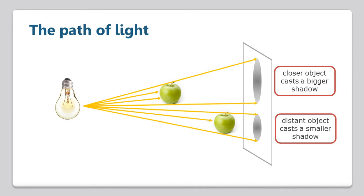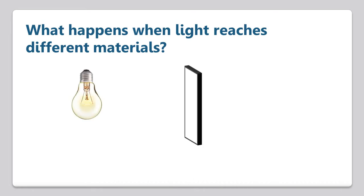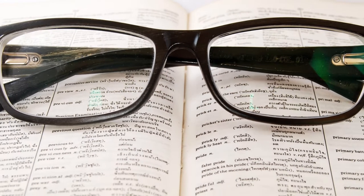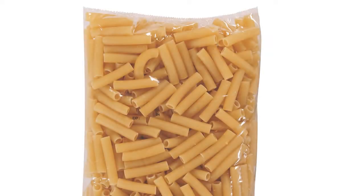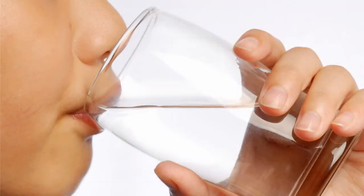Between this and our previous lesson, we can now say that light is a form of energy that moves in straight lines. The ray model of light can help us explain how light interacts with different types of materials. Clear materials, for example, allow rays of light to take a straight path right through the material. We call these materials transparent, which comes from Latin and means easily seen through. Transparent materials include the lenses in eyeglasses, some plastics like packaging used for pasta, even a regular drinking glass and the water it holds are both transparent materials.